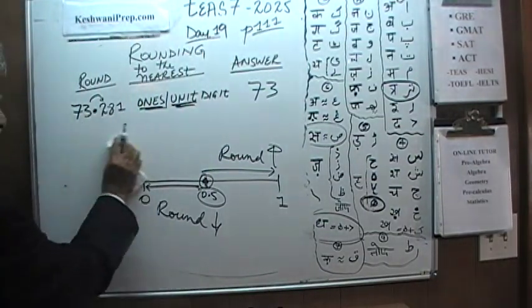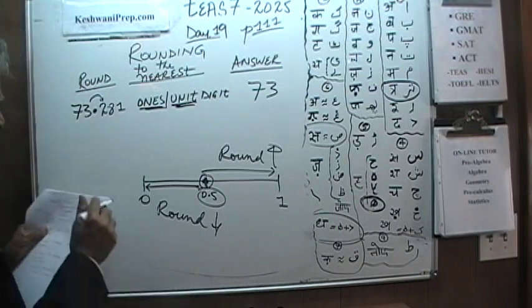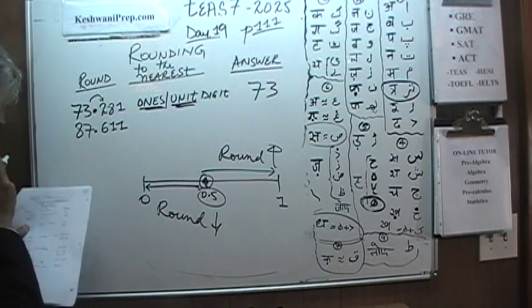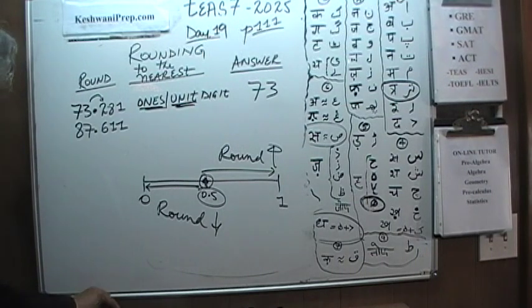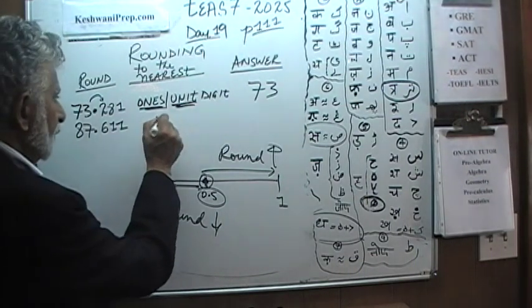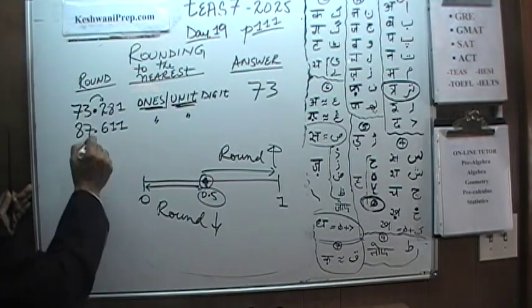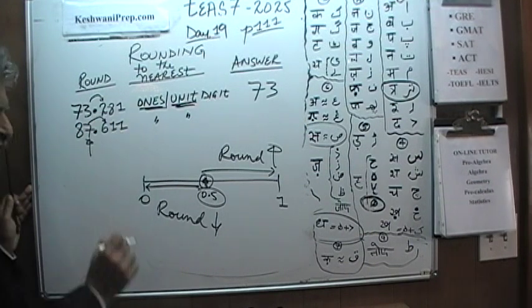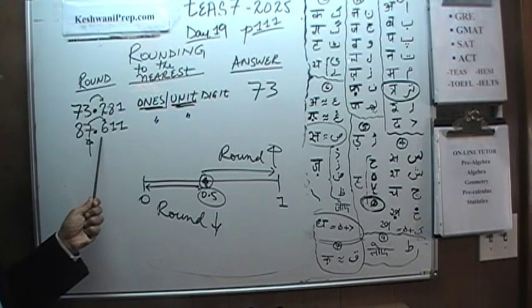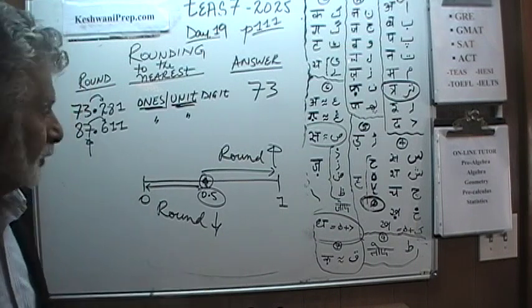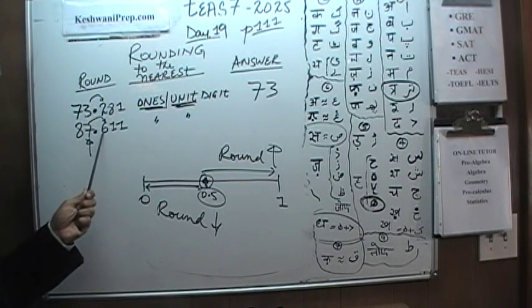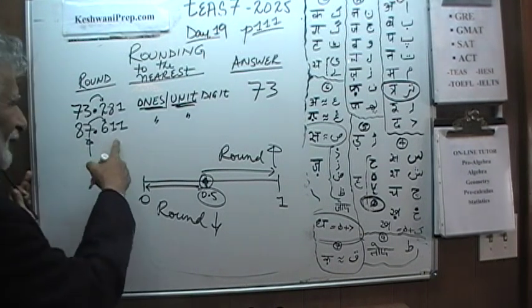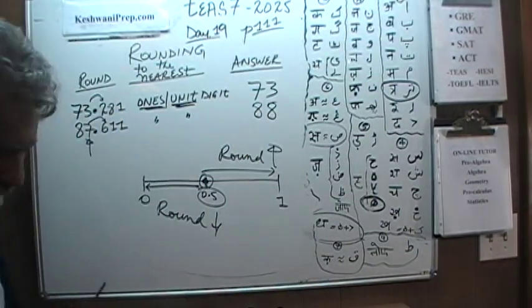How about 87.611? Again, we are being asked to round it to the nearest ones or unit digit. The next digit that comes after the ones digit is 6. Since 6 is 5 or more, we have to round this one up. 87.611 becomes 88.